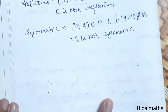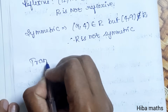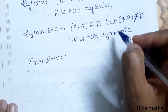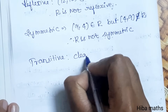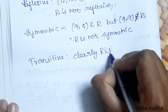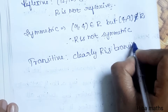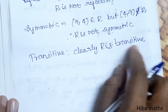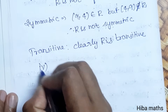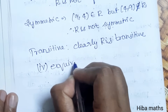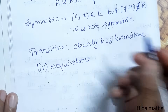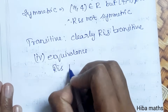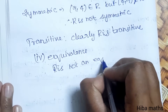Since R is not reflexive and not symmetric, we check transitive. R is transitive. Since equivalence requires reflexive, symmetric, and transitive all to be satisfied, and R is not reflexive and not symmetric, equivalence is not satisfied. Therefore R is not an equivalence relation.